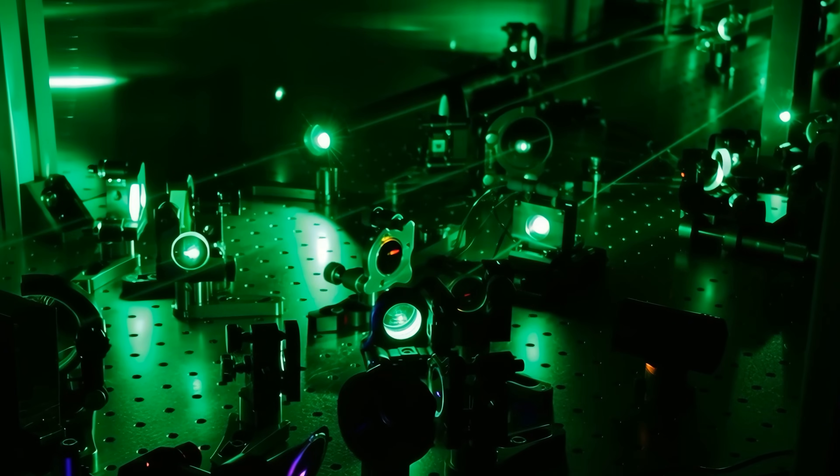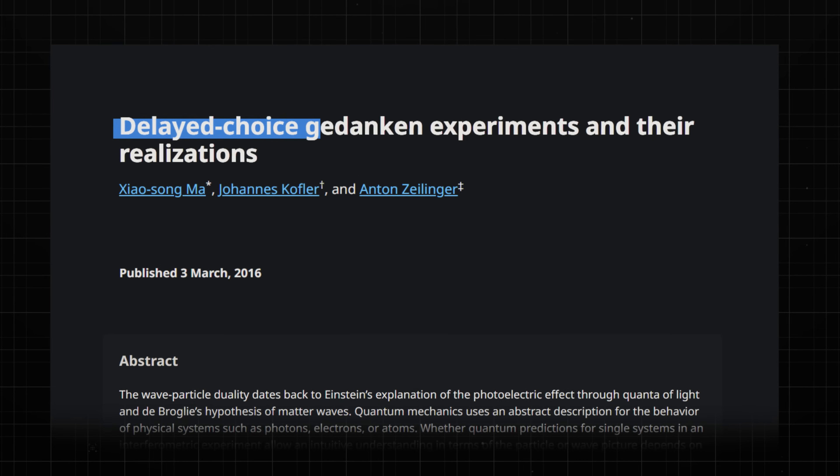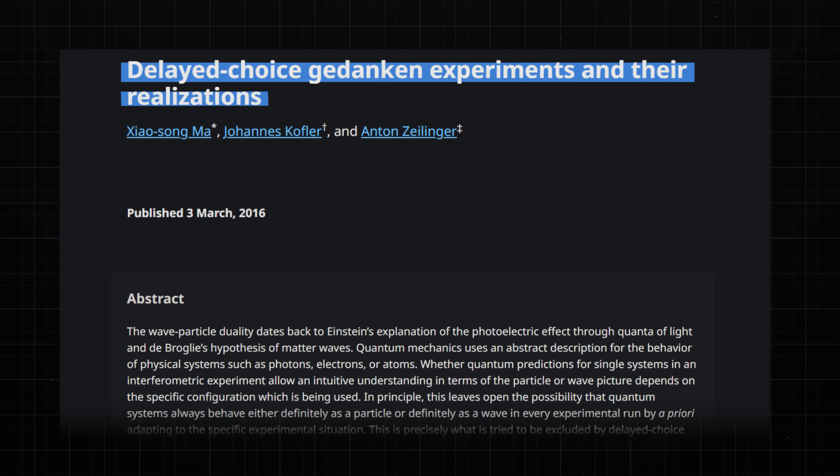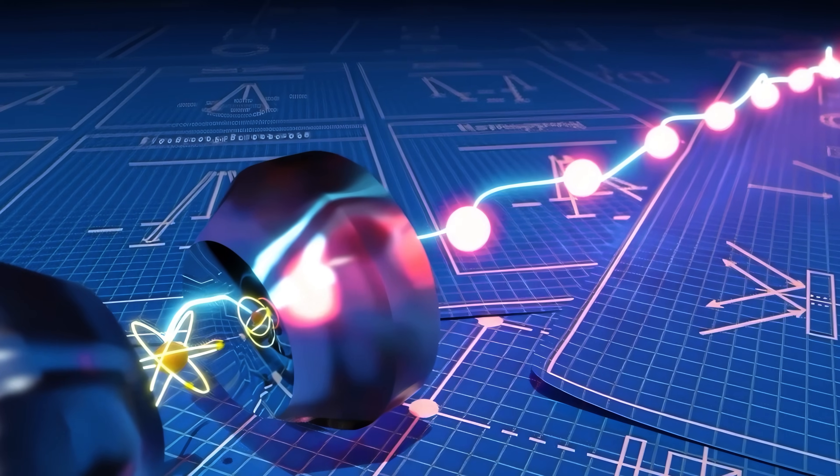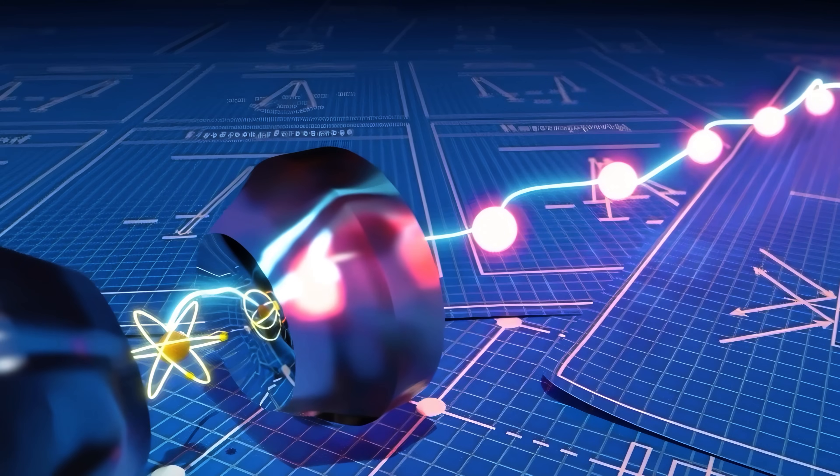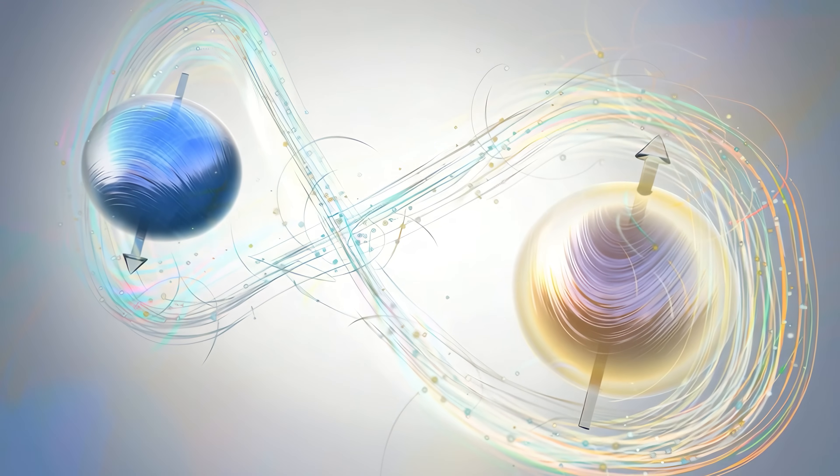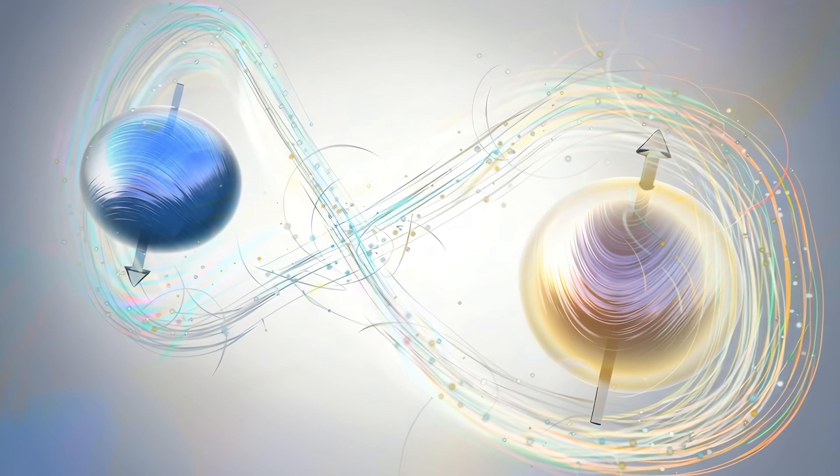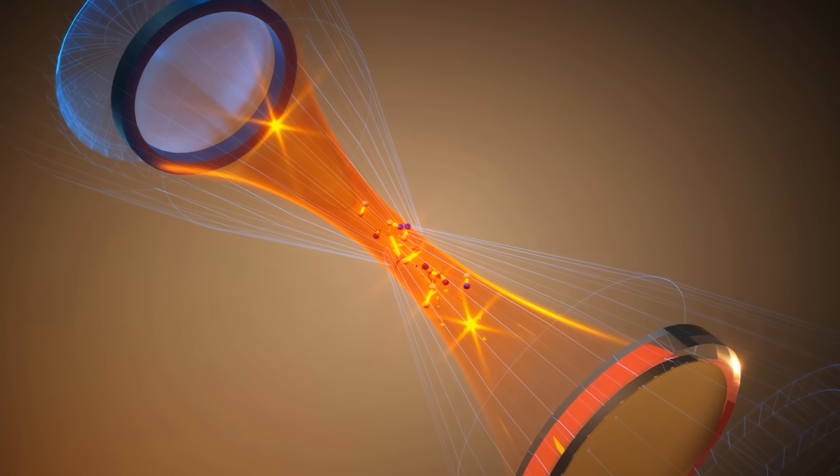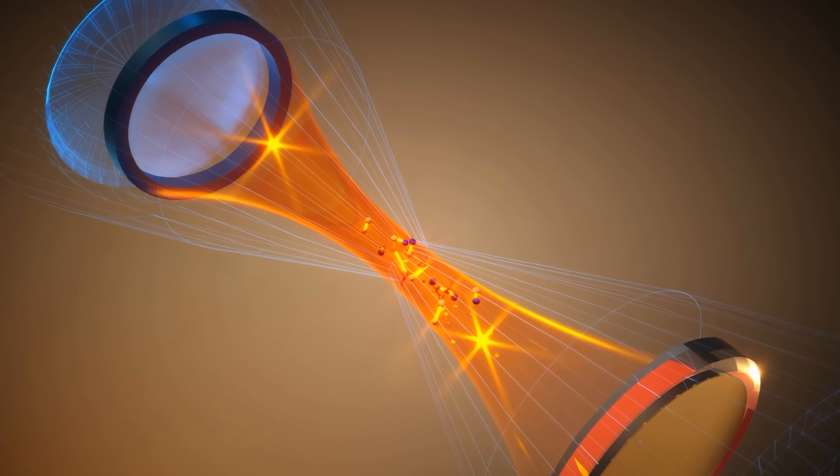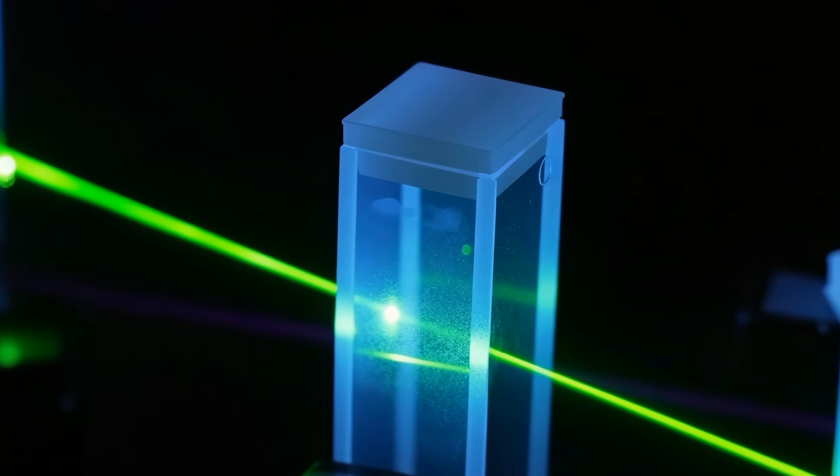Another intriguing direction is the concept of the quantum eraser. Since the setup can control whether path information is preserved or erased, it's perfectly suited for such experiments. The team could, for instance, allow a photon to scatter and then adjust or measure the atomic state in a way that effectively erases the path information, leading to the reappearance of interference. Such experiments would shed further light on how information and measurement shape reality, essentially rewriting the observer's knowledge without changing the original event.